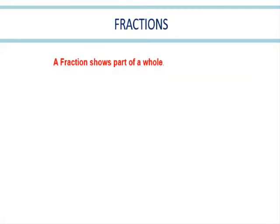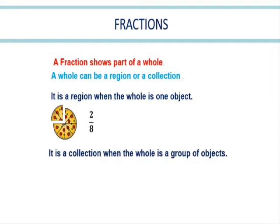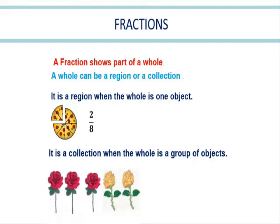A fraction shows part of a whole. A whole can be a region or a collection. It is a region when the whole is one object — for example, this whole pizza is divided into eight equal parts, and out of eight equal parts we are taking two parts, so the fraction is two by eight. It is a collection when the whole is a group of objects, such as a group of five flowers or a group of four cupcakes.